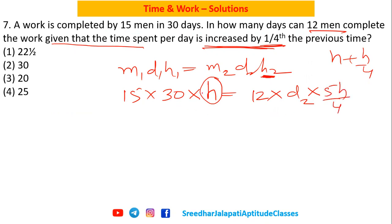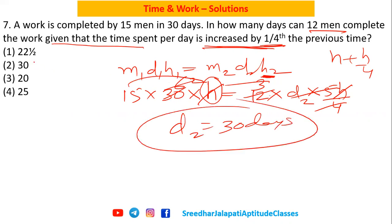So on simplification both sides, h and h get cancelled. Four ones four, threes five ones five, six three ones three twos. So 15 into 30, so that means they take 30 days to complete the task. That is option two.